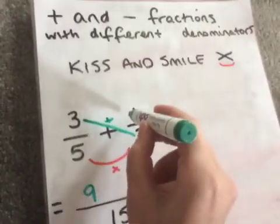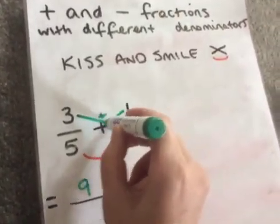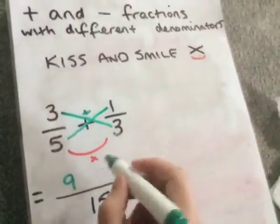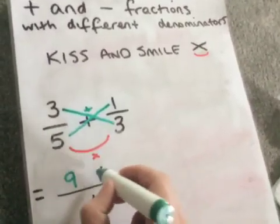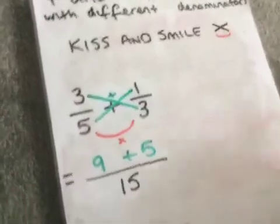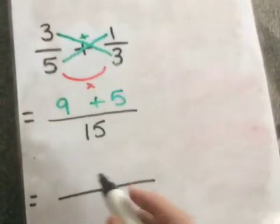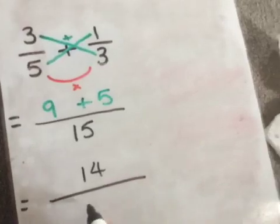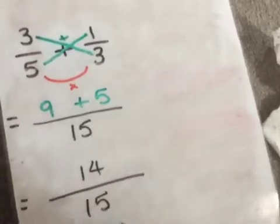Then we're going to take the top number of the other fraction, the second fraction, and we're going to multiply it by the bottom number. We're multiplying, so we're going to get plus 5. Now we're just going to add the tops together. So 9 plus 5 gives us 14, and our denominator stays as 15.